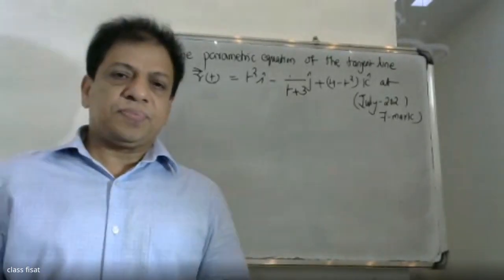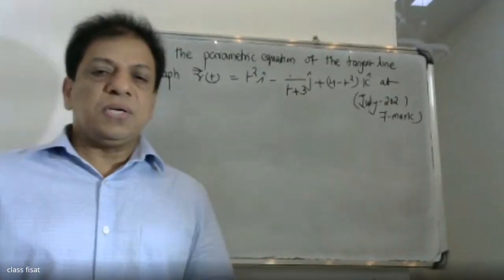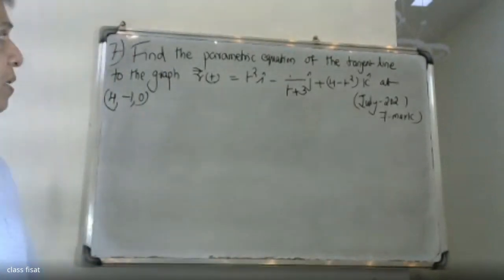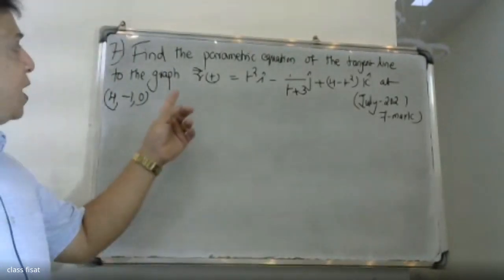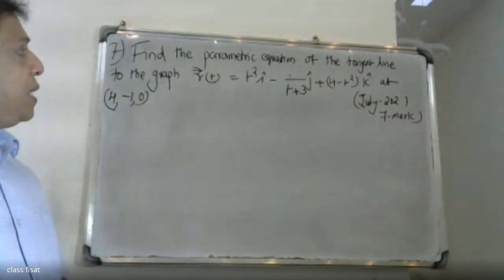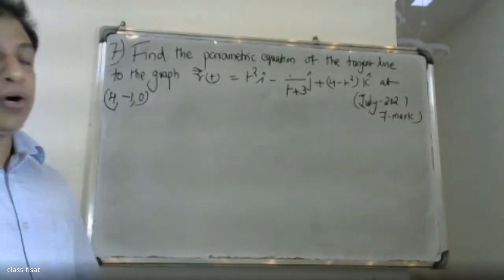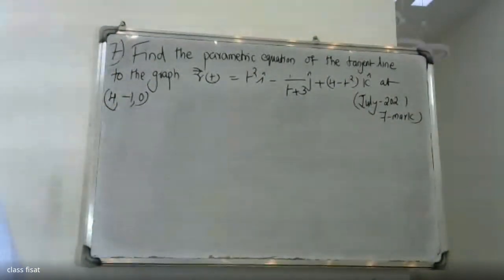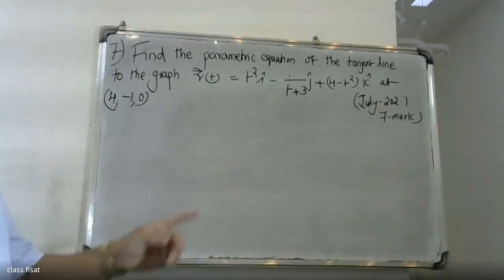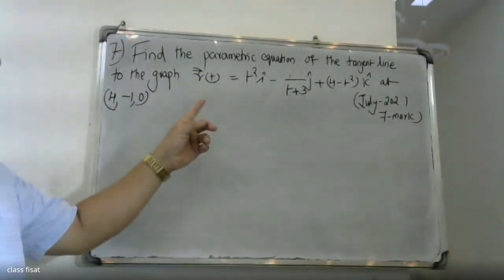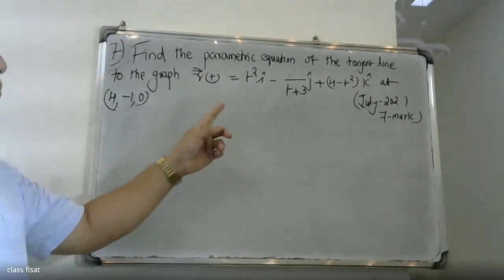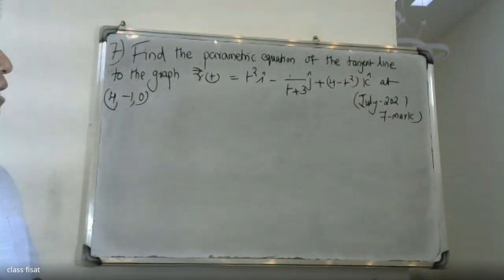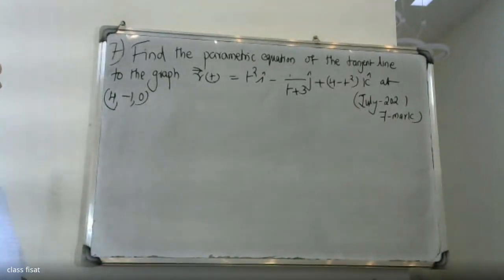Good morning students. Find the parametric equation of the tangent line to the graph r(t) = 3t²i minus (1/(t+3))j plus (4 minus t²)k at the point where t equals minus 1.